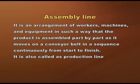Production was further speeded up by the introduction of the assembly line by Henry Ford at Ford Motors in the early 20th century. An assembly line is an arrangement of workers, machines and equipment such that a product is assembled part by part as it moves on a conveyor belt in sequence from start to finish. Each task is assigned to an individual worker, who becomes highly proficient at that single task. Workers must complete their task within the time determined by the speed of the conveyor belt.